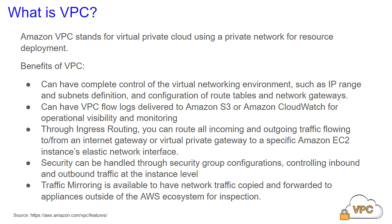VPC flow logs can be delivered to Amazon S3 or Amazon CloudWatch for operational visibility and monitoring. Through ingress routing, you can route all incoming and outgoing traffic flowing to or from an internet gateway or virtual private gateway to a specific Amazon EC2 instance elastic network interface.